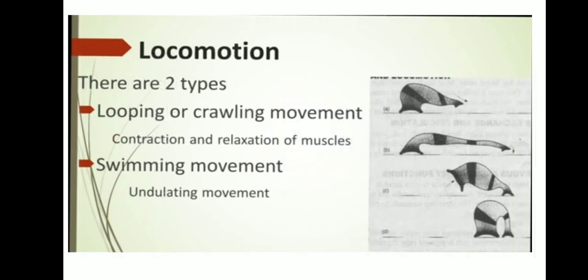Next, locomotion. There are two types of locomotion for the leech: looping or crawling movement, and swimming movement. Looping and crawling is a type of movement brought about by contraction and relaxation of muscles. The two suckers serve for attachment during movement on the substratum. For swimming movement, the leech swims very actively and performs undulating movement in the water.